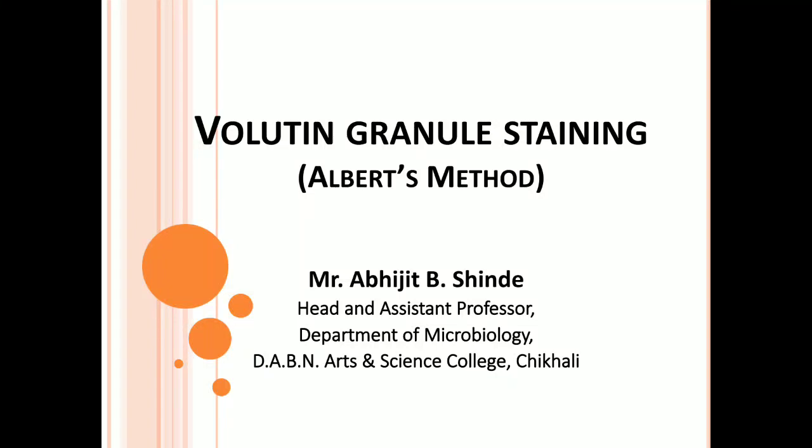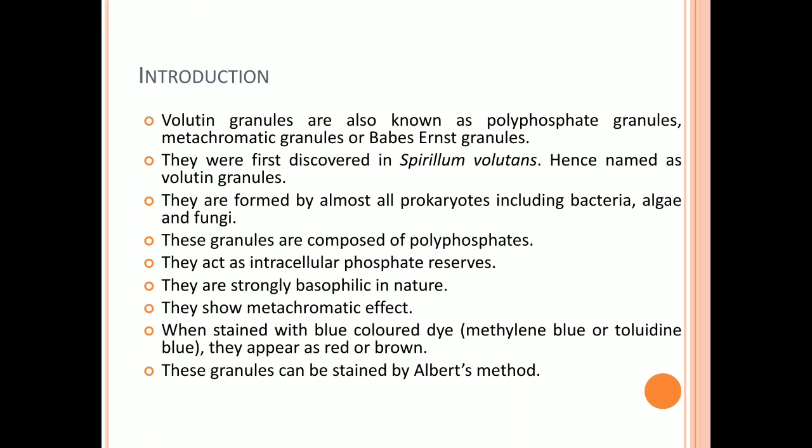Hello everyone. In this lecture we are going to study volutin granules staining by Albert's method. Volutin granules are also known as polyphosphate granules, metachromatic granules, or Babes-Ernst granules. They were first discovered in Spirillum volutans, hence named as volutin granules.